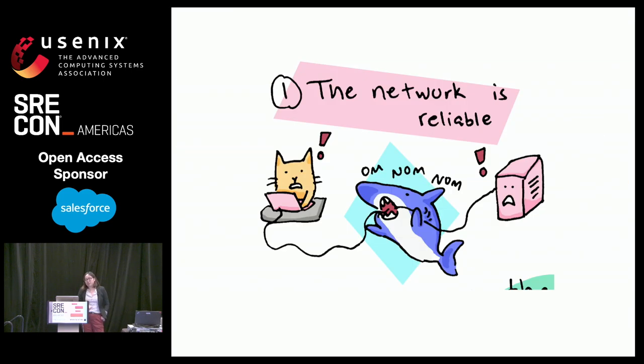We're going to zoom in on this one — the fallacy that the network is reliable. There are more sharks later on.